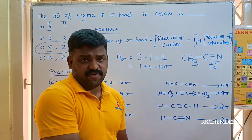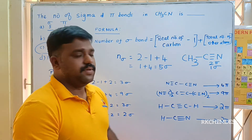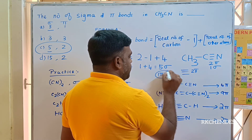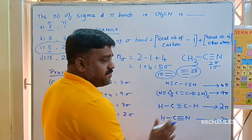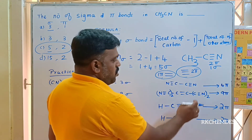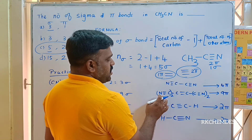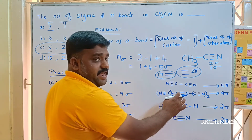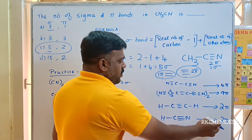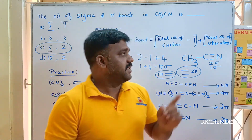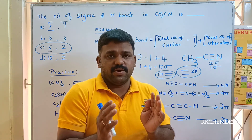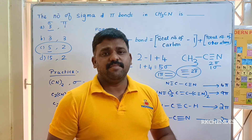If you have a triple bond in the structure, you can choose two pi bonds. If you have a double bond, you can choose one pi bond. Looking at the structures: each triple bond gives two pi bonds. So two triple bonds give four pi bonds, and two more triple bonds give another four, making eight plus one equals nine pi bonds total. Here one triple bond gives two pi bonds.